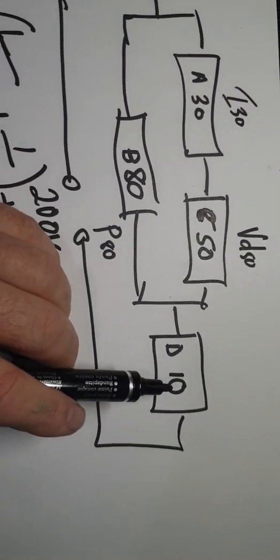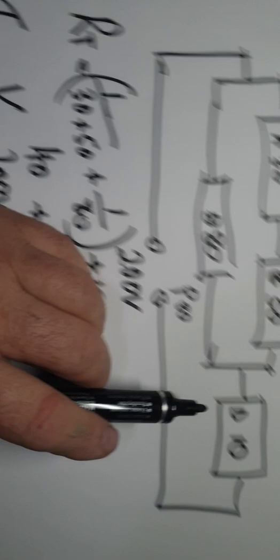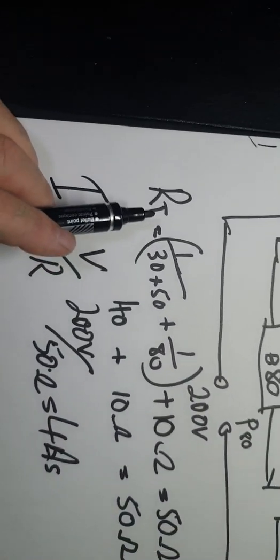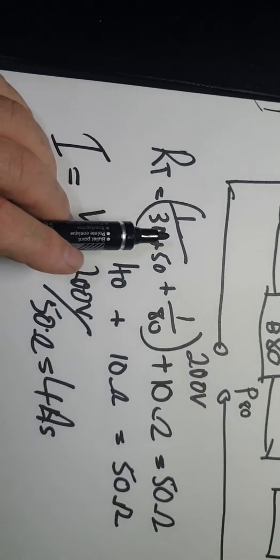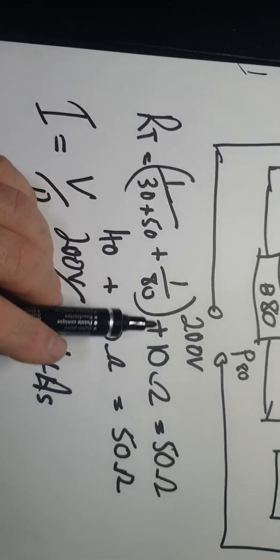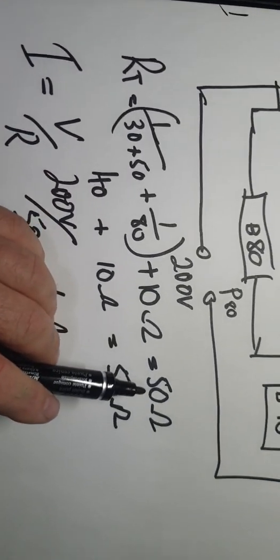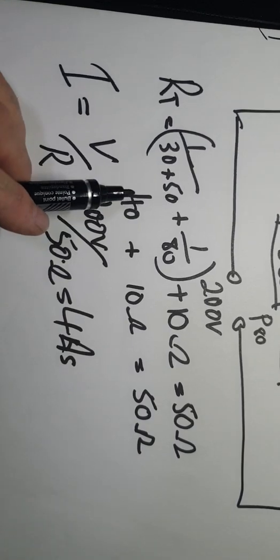We have this series-parallel circuit. So what I've done first is the resistance total: 1 over 30 plus 50 plus 80 equals 10 ohms, equals 50 ohms. So that's what I've broken down here.